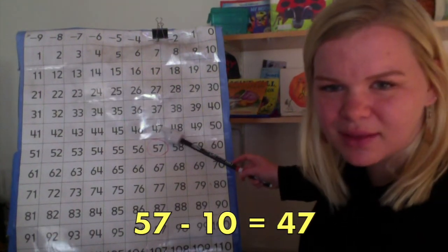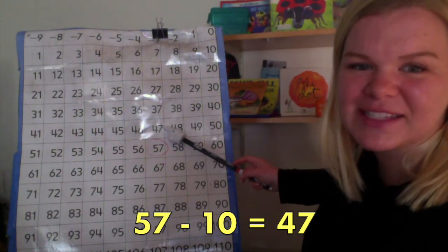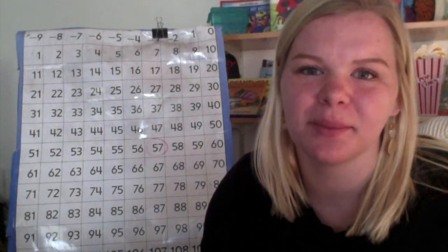I don't know if you can see it with the glare, but it says 47. Even with subtraction, we can still use the number grid to find a missing number in the number sentence.